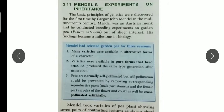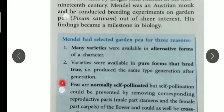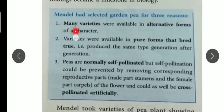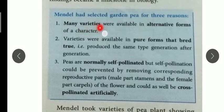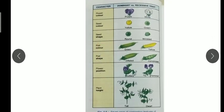Why did he select garden pea only? There are three reasons. First, pea comes in many varieties with alternate forms. For example, pea plant height can be tall or dwarf, color-wise the pea plant can produce white or purple flowers, pea pod color has two variants, and even the size and shape of the pea seed can be round or wrinkled.